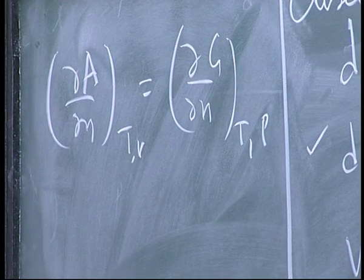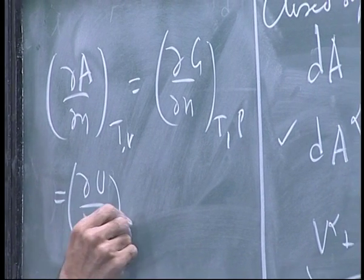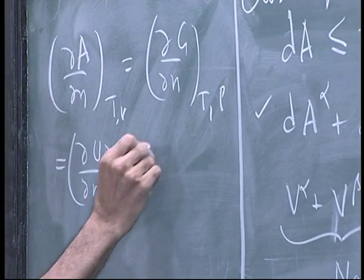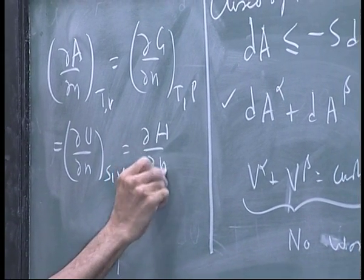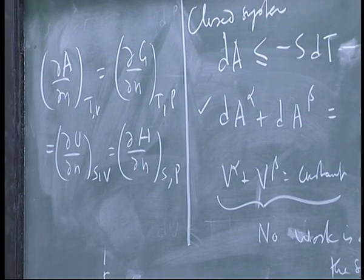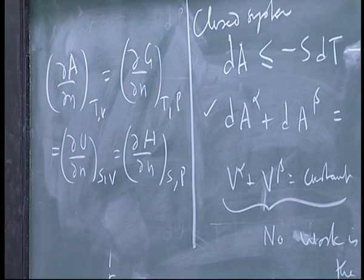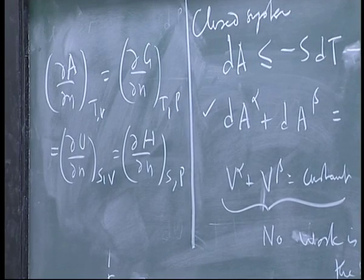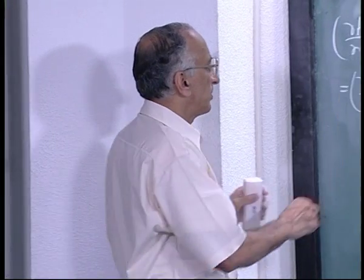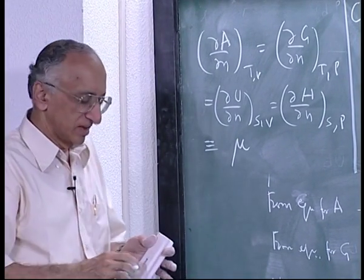By comparing these two — since G equals A plus PV — if you differentiate, dG gives minus S·dT minus P·dV exactly. So by comparison, the partial of A with respect to N at constant T and V equals the partial of G with respect to N at constant T and P. This is also equal to the partial of U with respect to N holding S and V constant, because of the redundancy we introduced. U was the only independent quantity; H, A, and G were introduced by combination.